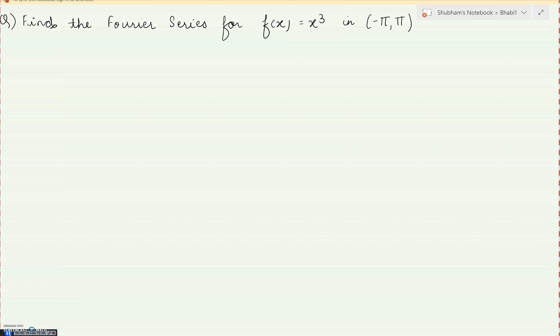So the first thing which comes to mind is to check whether the function x cube is even or odd. How to check whether the function is even or odd? Replace x by minus x. So f of minus x will be minus x cube, which is the same as minus of x cube. So between this f of x and this, there is an additional minus sign. So whenever we have that additional minus sign, we can write that the function is an odd function.